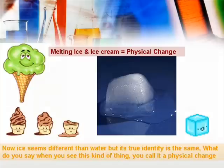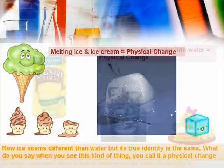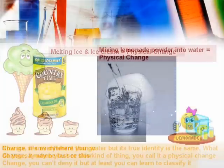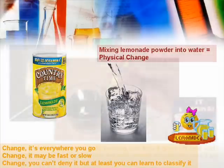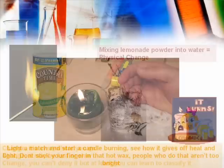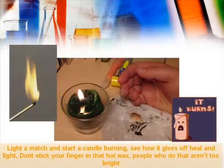What do you say when you see this kind of thing? You call it a physical change. Change, it's everywhere you go. Change, it may be fast or slow. Change, you can't deny it, but at least you can learn to classify it.